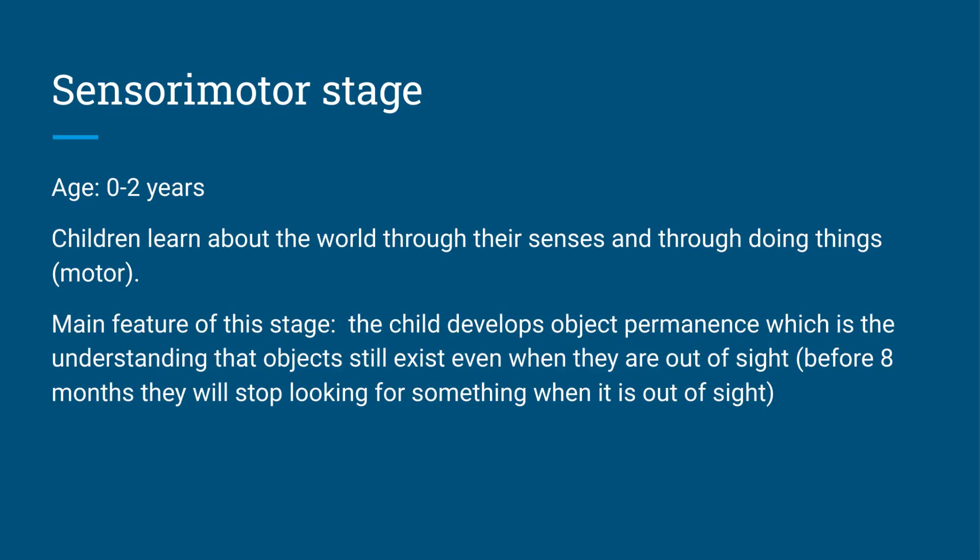The main feature of this stage is that a child develops something called object permanence, which is the understanding that objects still exist even when they're out of sight. In those first eight months of life, a child would stop looking for something if it was put out of sight. If you had a three-month-old baby and you put a little teddy bear out of sight, they wouldn't look for it. They wouldn't understand that that object still exists. But from eight months onwards, they start to develop this understanding that objects still exist even when they are out of sight.